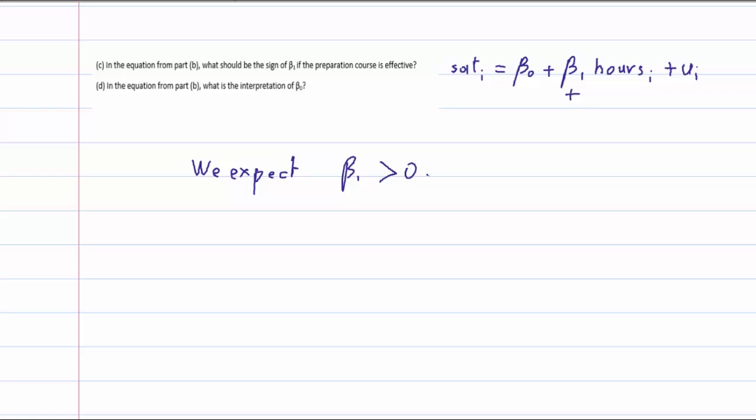And in the equation from part B, what is the interpretation of beta zero? We see that beta zero is the value of SAT when hours equals zero, when there is no preparation. And that's a situation that's likely to happen.